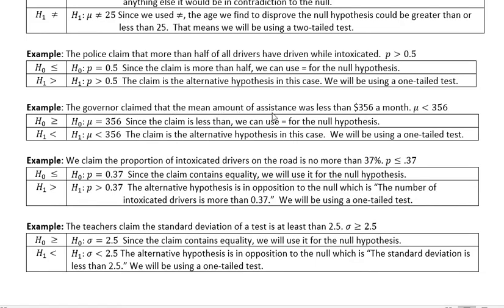The governor claimed that the mean amount of assistance was less than $356 a month. Again, this is mu. It's less than 356. This statement does not contain an equal sign. So the claim is the alternative hypothesis in this case. It's less than. Since the alternative is less than, the null hypothesis is greater than or equal to, which we will then change just to equal to. And because we're going in one direction here, we'd be using a one-tailed test.